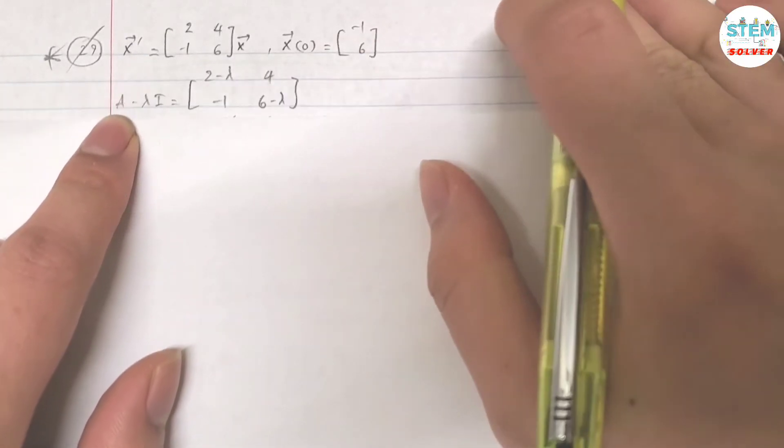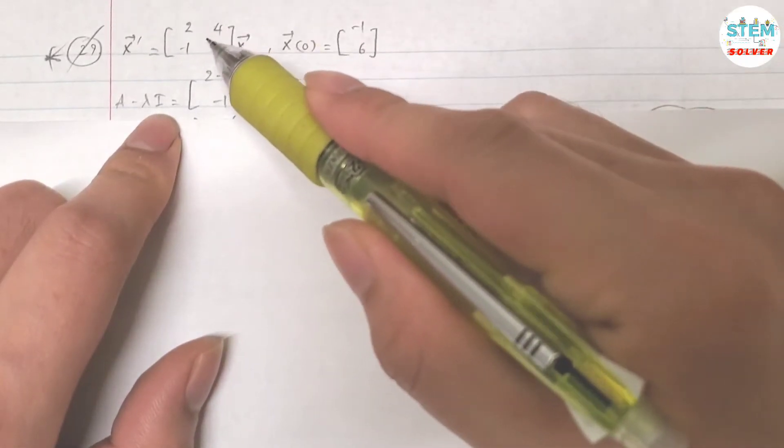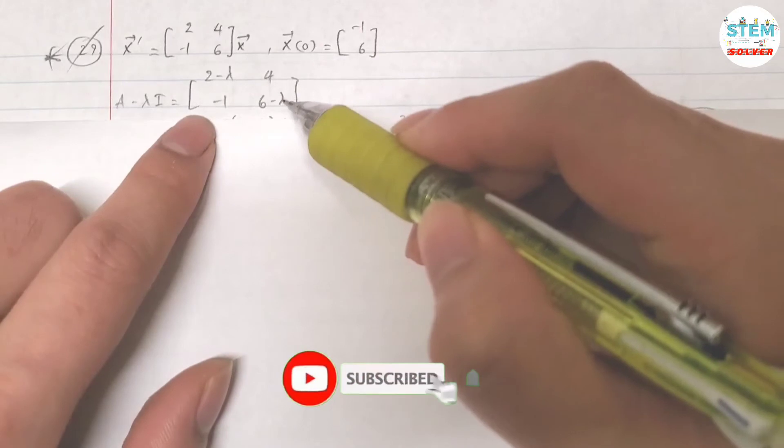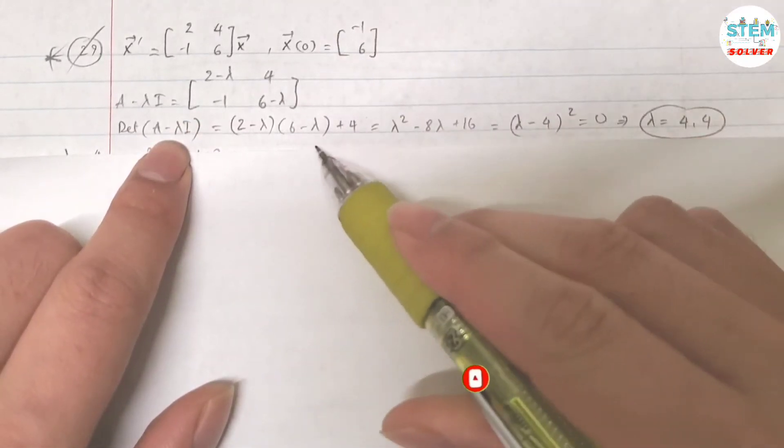First, phi A minus lambda I. Let's call this matrix A, subtract with lambda I, that gives you this matrix. Then phi is determinant, that gives you this one. Distribute this out, simplify it.